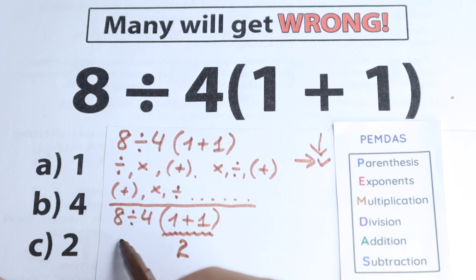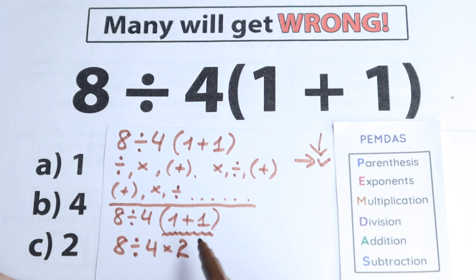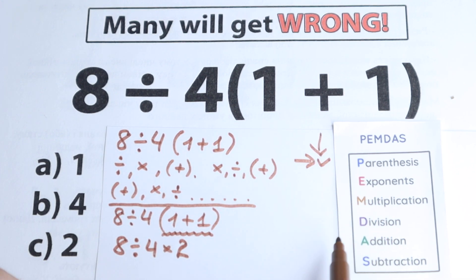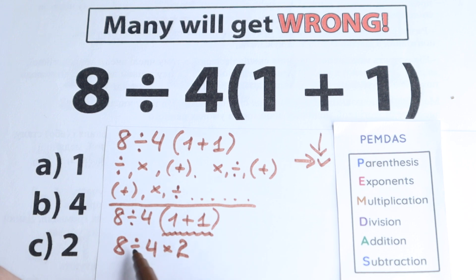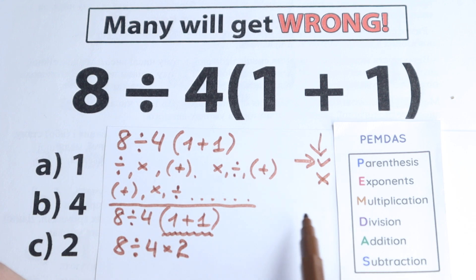After that step we have 8 divided by 4, times 2. This is a really interesting moment because there is a lot of discussion all over the world about whether division or multiplication comes first. The next step in PEMDAS is exponents — we don't have any squares or cubes here, so we skip that step.